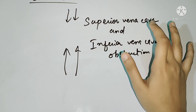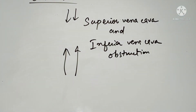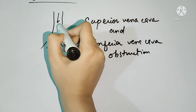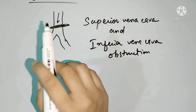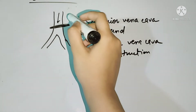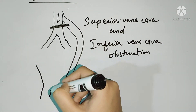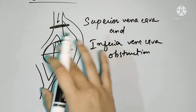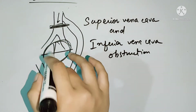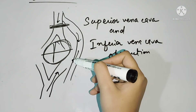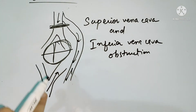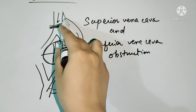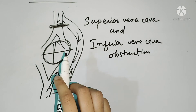Suppose there is a superior vena cava obstruction. The blood from the upper body cannot drain through the superior vena cava. Since the inferior vena cava has no obstruction, the blood must find another way. The blood will reroute and drain via the inferior vena cava. So in superior vena cava obstruction, blood flows from above downwards to reach the inferior vena cava.